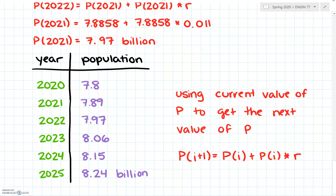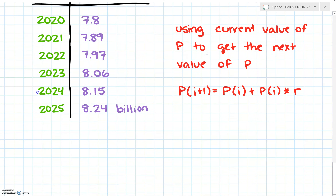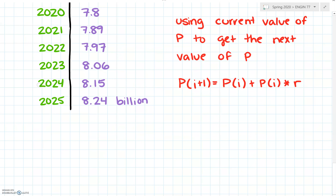When I say this is our derivative, I mean we can write an equation for the derivative: dp/dt — the change in population over a certain amount of time — is going to be r times p at some time. This is a differential equation.